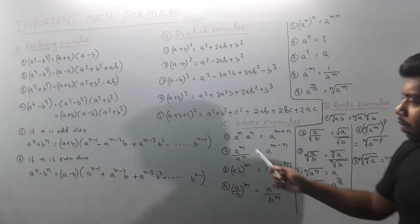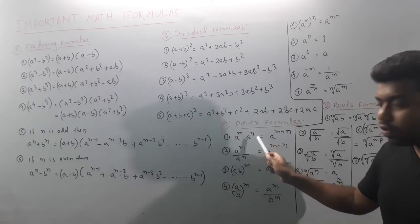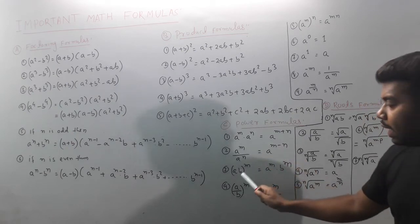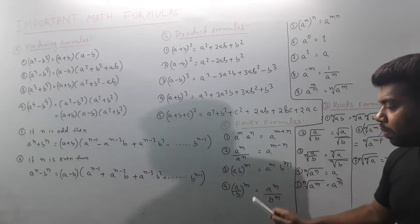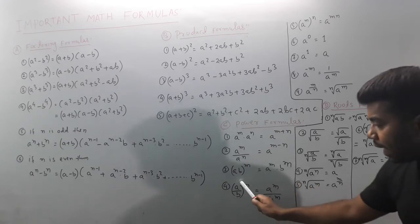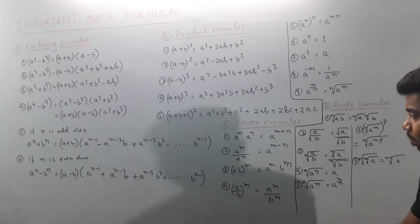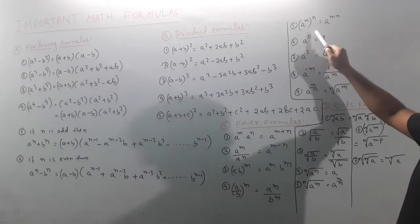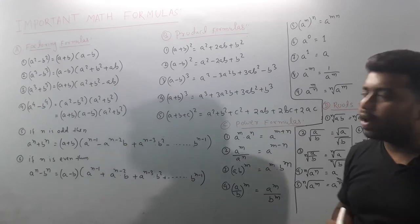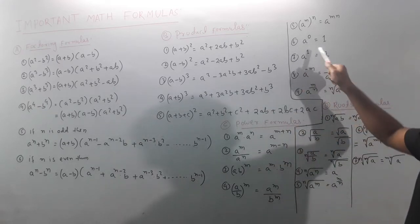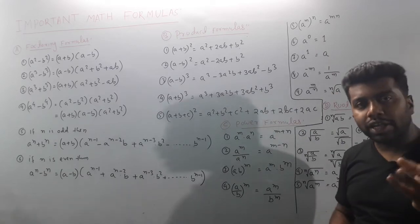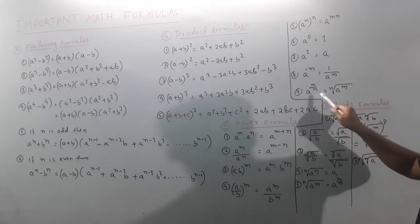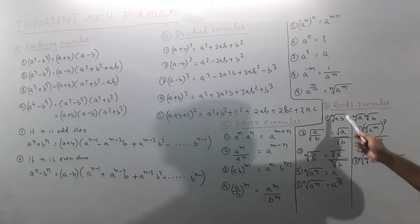Next is the power formula. aᵐ × aⁿ = aᵐ⁺ⁿ. aᵐ ÷ aⁿ = aᵐ⁻ⁿ. (ab)ᵐ = aᵐ × bᵐ. (a/b)ᵐ = aᵐ ÷ bᵐ. (aᵐ)ⁿ = aᵐⁿ. a⁰ = 1. a¹ = a. a⁻ⁿ = 1/aⁿ. And aᵐ/ⁿ = ⁿ√(aᵐ).